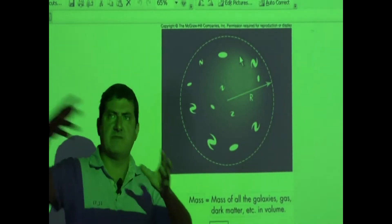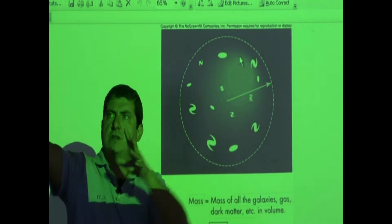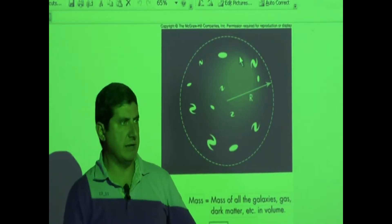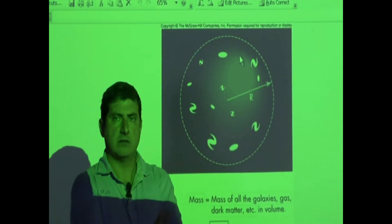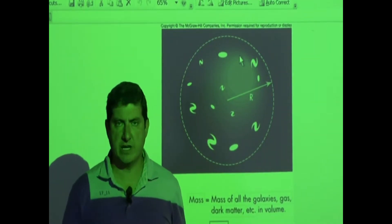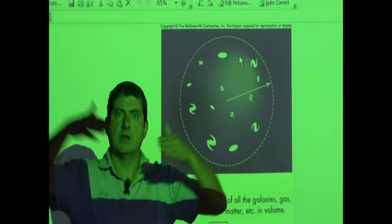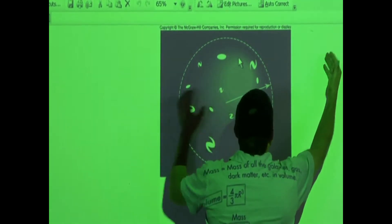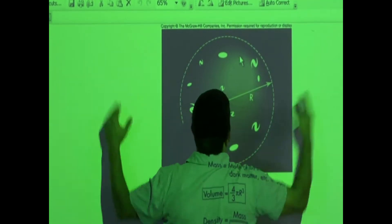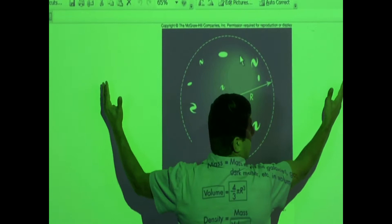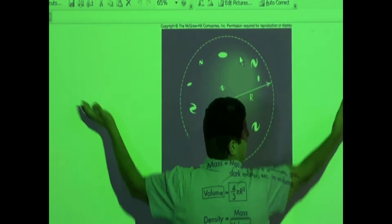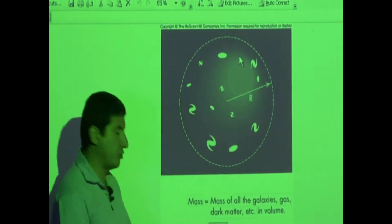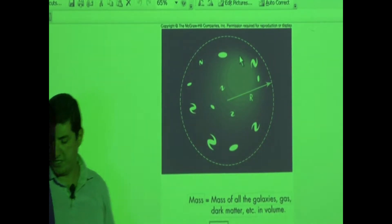Just take a certain volume, estimate the mass of objects, and divide the mass by the volume. Then you can double the volume, estimate the mass of everything there, divide by the volume, and come up with the density. This gives us the average density of the universe.